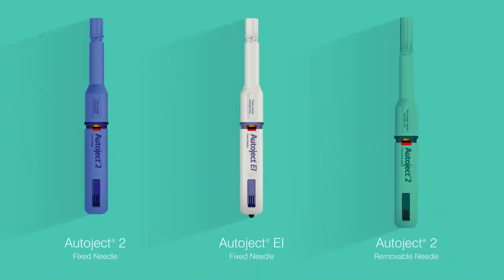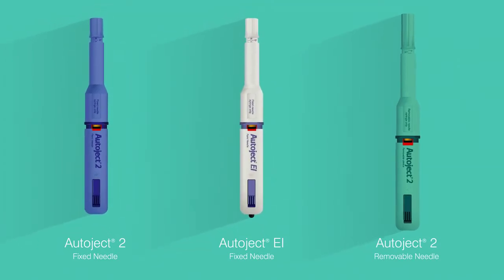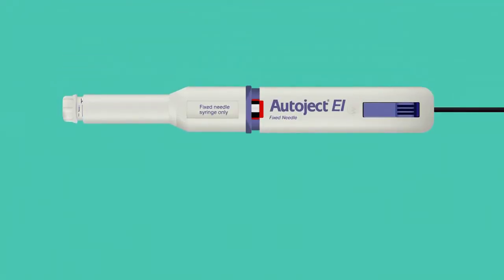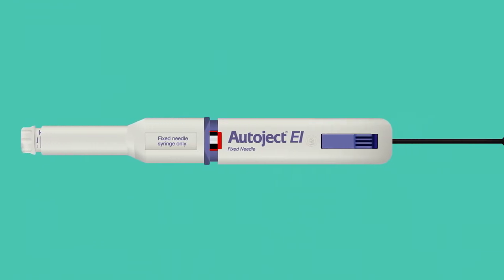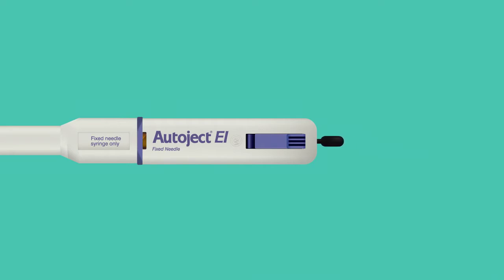Autoject is available in several models including two that work with traditional fixed needle syringes and one for use with removable needle tuberculin syringes. Autoject 2 fixed needle and Autoject EI are the most versatile and can be used with a wide range of syringes. The Autoject EI device features an external indicator providing confirmation that the full dose has been delivered. The built-in indicator also serves to help individuals with visual impairments know when their dose is complete.